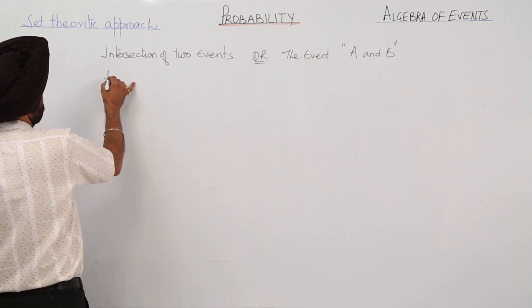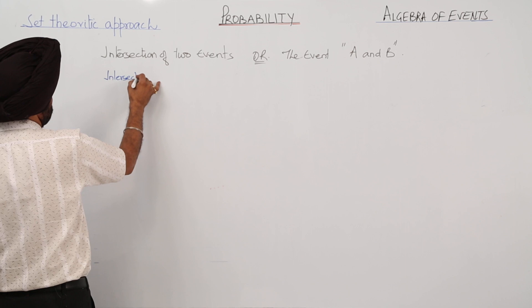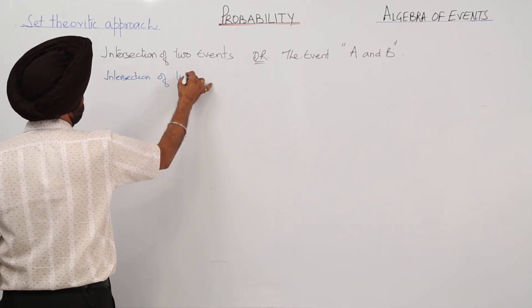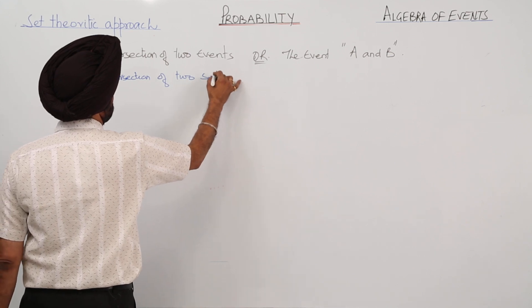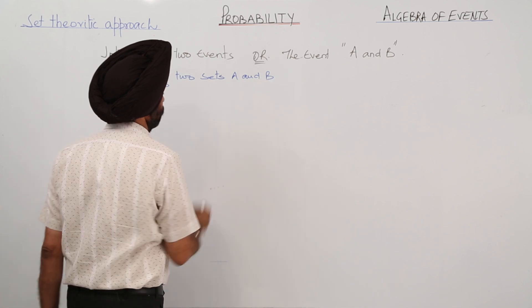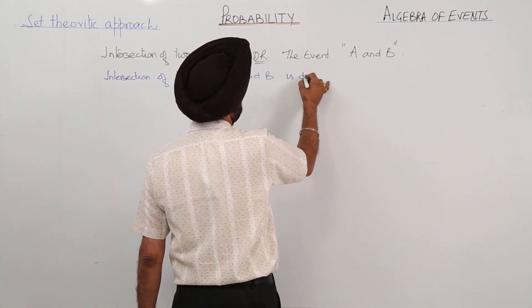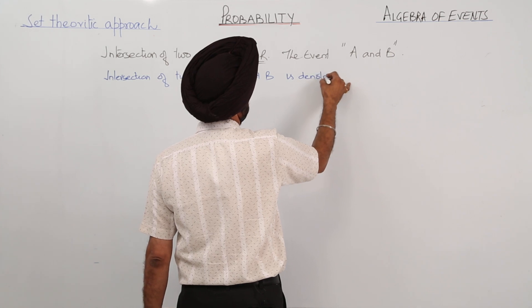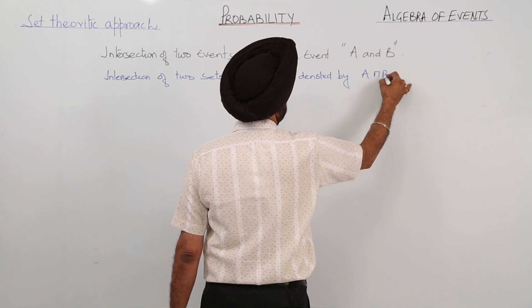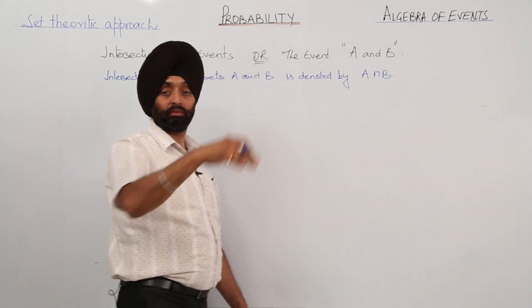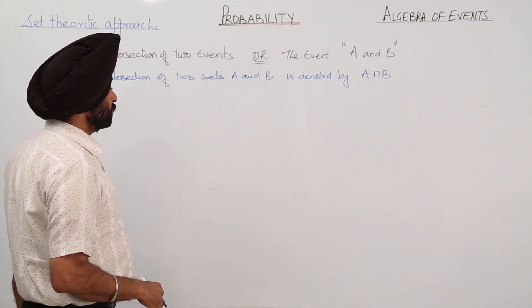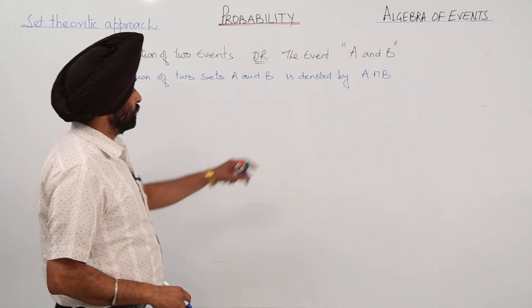Intersection of two sets A and B is denoted by A intersection B, or it can be in round form also. Intersection of two sets A and B is denoted by A intersection B.